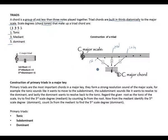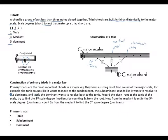The first degree is the tonic. The third degree is the mediant, and the fifth degree is the dominant. All these chord tones form a major triad. In a major key, primary triads are the most important chords. They form a strong resolution sound of the major scale — the tonic sounds like it wants to move to the subdominant.